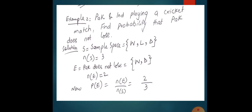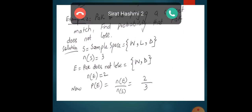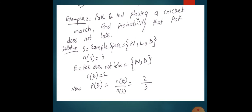Next example: Pakistan and India are playing a cricket match, and we want to find the probability that Pakistan does not lose. First, calculate the sample space — all possible outcomes of a match: win, lose, or draw. The number of sample space equals three. The event is that Pakistan does not lose, so the elements are win or draw. The number of event equals two, and the probability of that event is two over three.